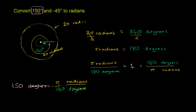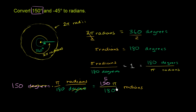So we get 150π over 180 radians. To simplify, we divide numerator and denominator by 30: 150 divided by 30 is 5, and 180 divided by 30 is 6. So we get 5π over 6 radians.